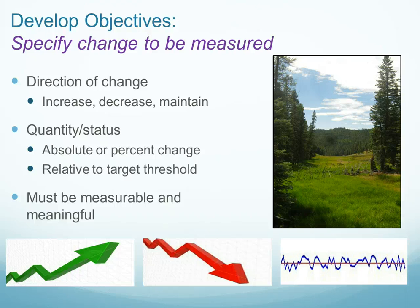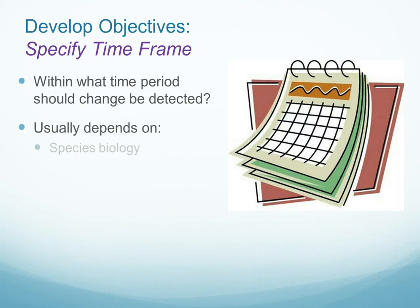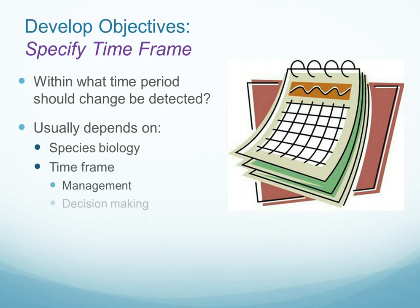Always what we focus on must be measurable and it must be meaningful to management. We also have to specify the timeframe in which we think we will be able to detect a change. Usually this depends on species biology — whether we are focusing on an annual, short-lived perennial, or long-lived perennial — and also the timeframe relative to management, including our ability to make and implement decisions and the timeframe for planning purposes.